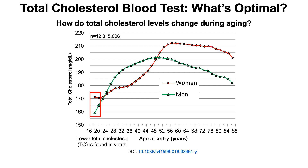First, we can see that lower levels of total cholesterol are found in youth — values around 170 for women and 160 for men are found in 18-year-olds. Cholesterol levels then increase during aging: for women, 170 goes up to about 210 with a peak at about 56 years of age, whereas in men it goes from 160 to about 200 at around 48 to 50 years of age. After those ages, total cholesterol levels decline towards the end of life.